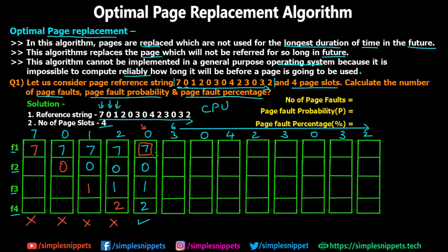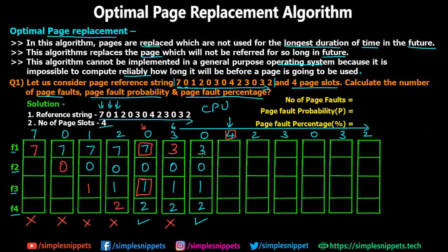Similarly, page one is also not needed after step six, so we could replace either one or seven — we choose to replace seven with three. In step seven, page zero is requested and already in memory — no page fault. In step eight, page four is requested and not in memory. Looking ahead, page one is not required at any future step, so we swap out page one and load page four. This is a page fault.